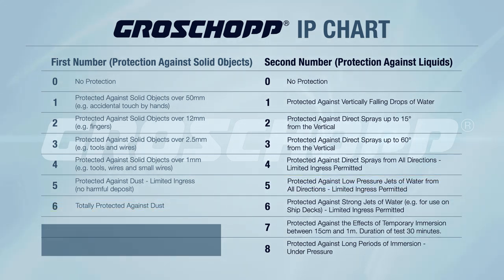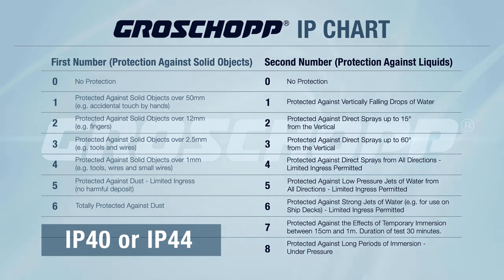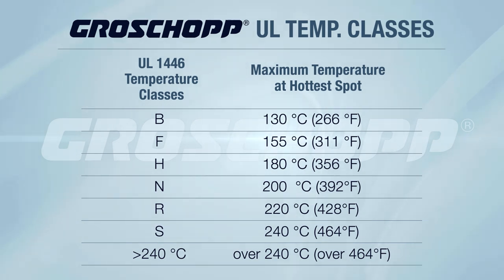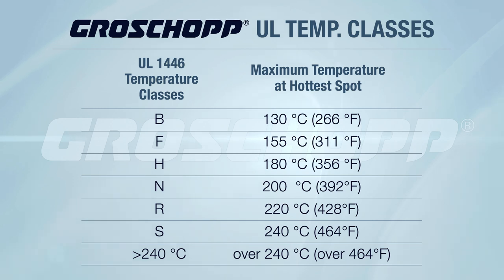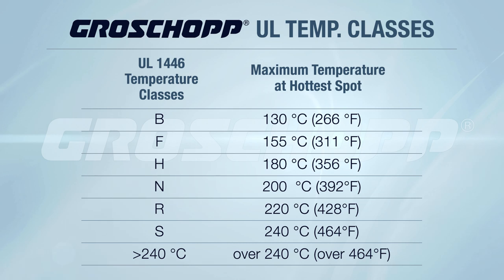Our standard motors are built with either IP 40 or IP 44 ratings, but we can increase the protection as needed. Our second reference tool is a chart for UL temperature class ratings. This will give you a general idea of how hot the internal temperature of the motor can go before it will start to see damage.